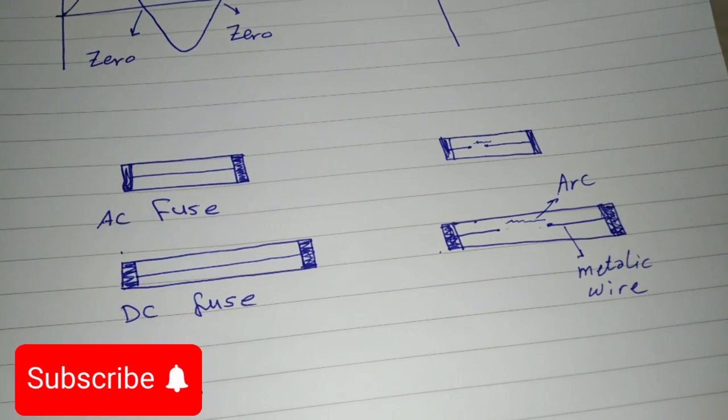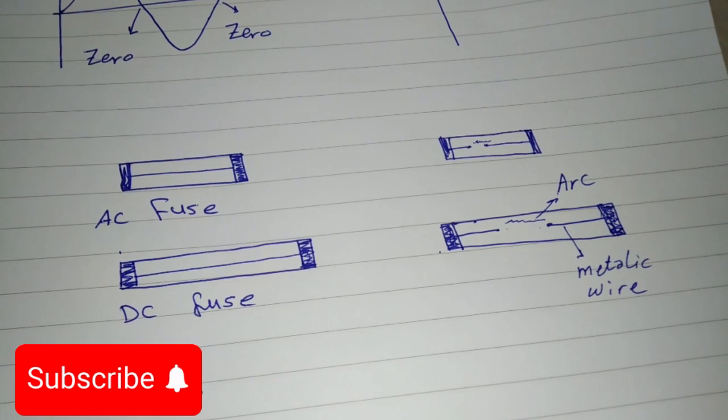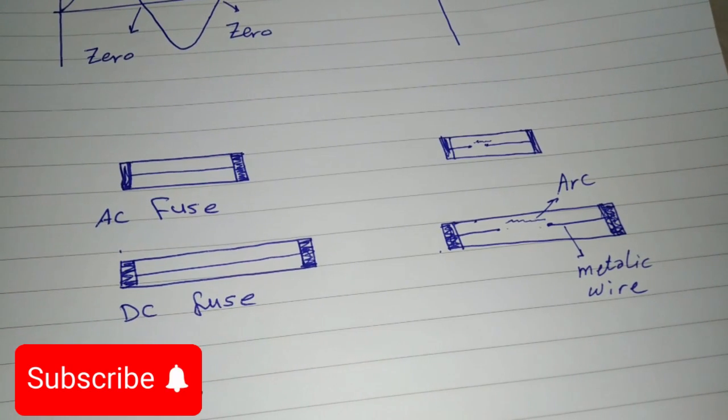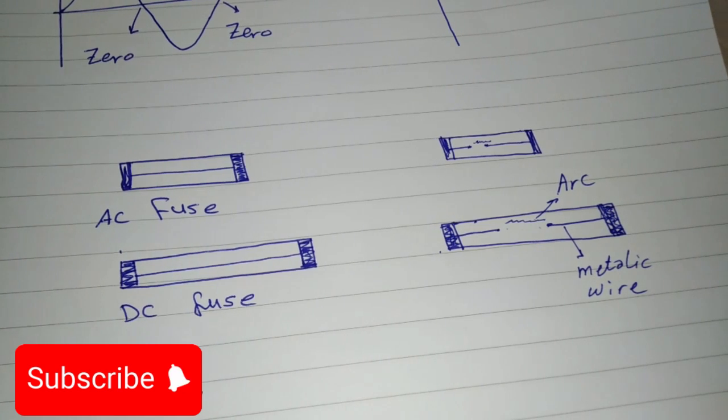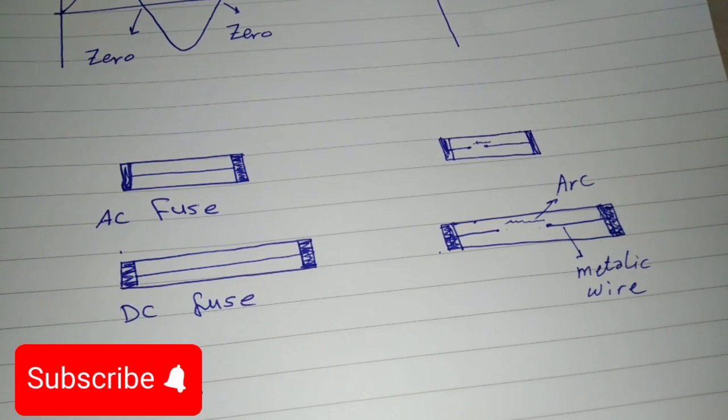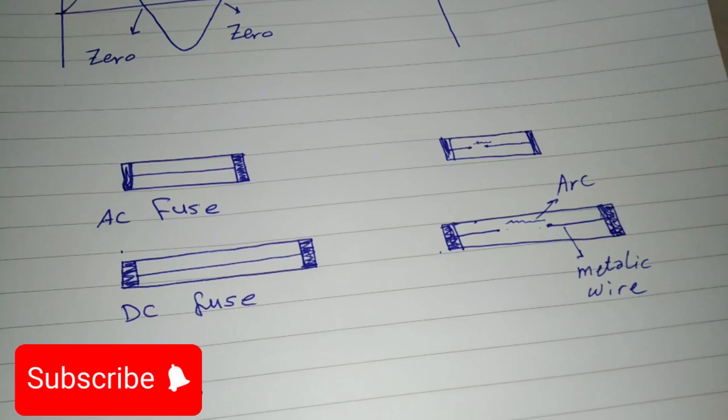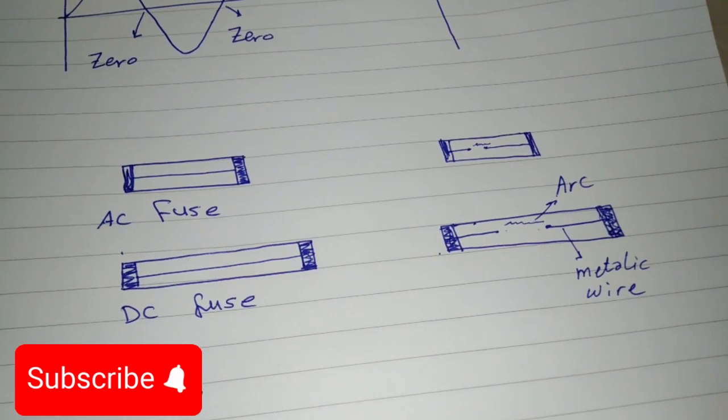Plus, not to mention, AC and DC fuses are built differently, kind of like how a sports car is built for speed and a truck for hauling. Using an AC fuse in a DC system is like bringing a kayak paddle to a mountain climb, not exactly the right tool for the job.